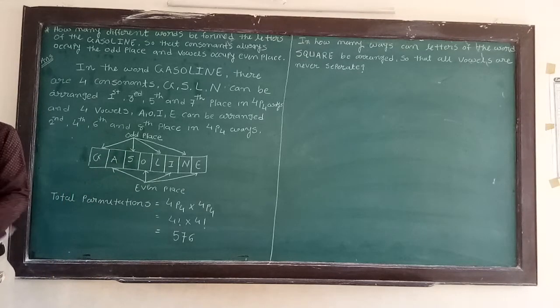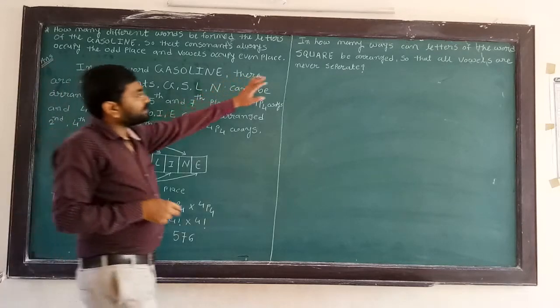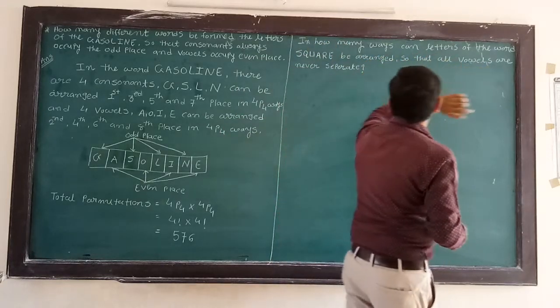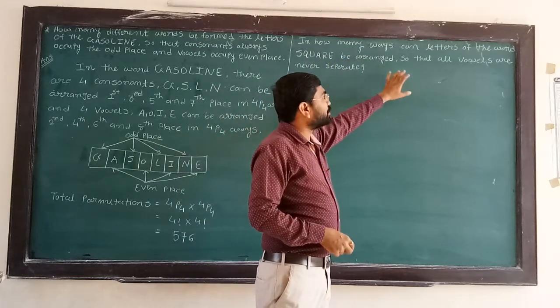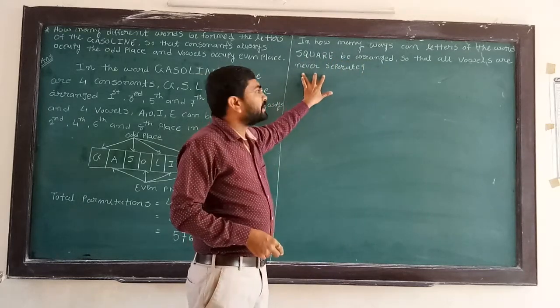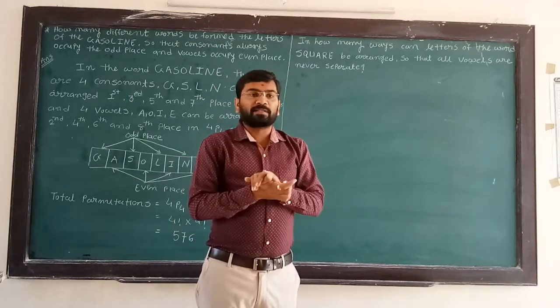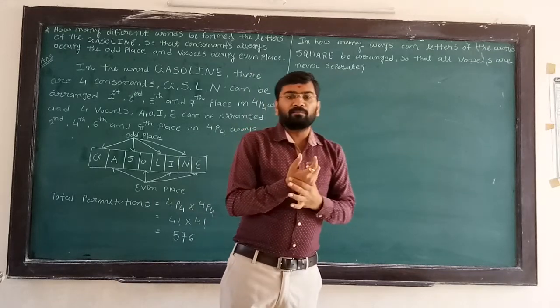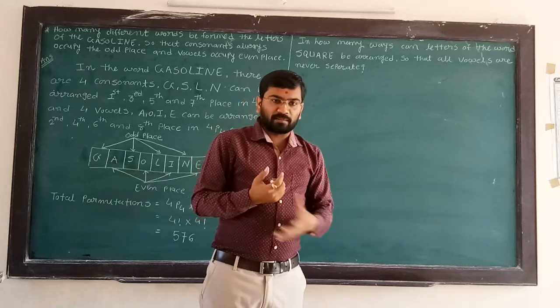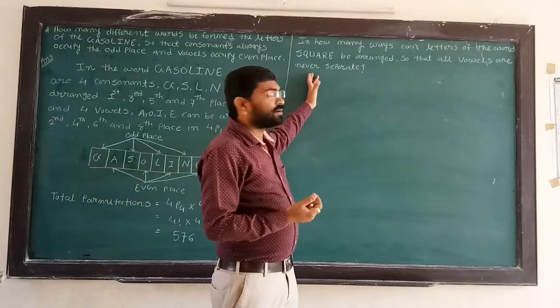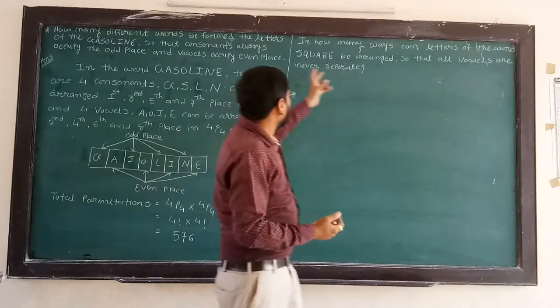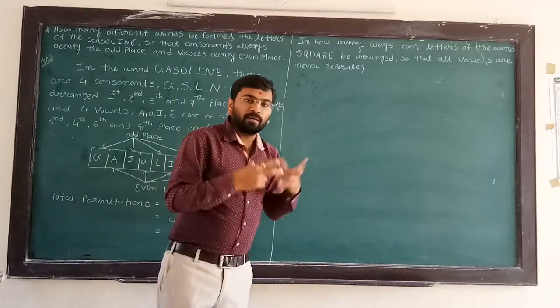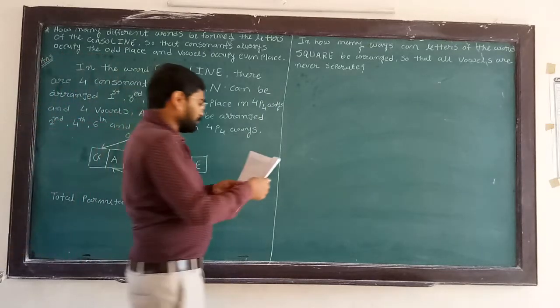Now the second example. In how many ways can letters of the word SQUARE be arranged so that vowels are never separate? See students, vowels are never separate means vowels are always together. In the last two or three lectures, we arranged sisters and brothers in this way. Here, vowels are never separate means all the vowels form one group. Let's start.